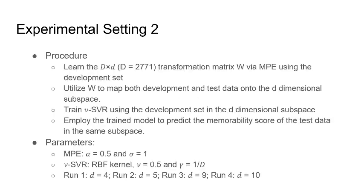First of all, we learn the transformation matrix W by using the proposed method on the development set, and then we utilize the learned W to map both the development set and the test set onto the low-dimensional subspace. After that, we train the SVR using the development set in the subspace, and finally we employ the trained SVR model to predict the memorability score of the test data in the same subspace.